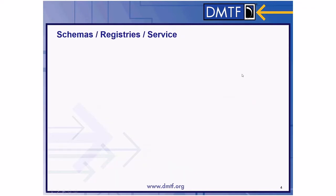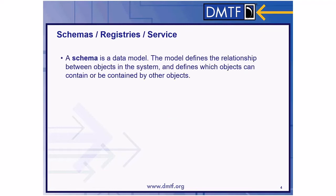I want to clarify some terms first. The schema is a data model — it defines the relationship between objects and the system. It is the data definition, such as description, name, format, length, and range.